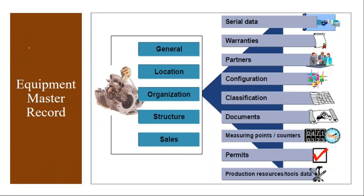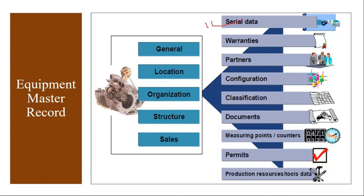In the equipment master record, you have tabs where you will maintain the data - tabs like general data, location data, organization data, structure data, and also sales data, because we are selling it to the customer. You can also maintain serial data, warranty data since we give some warranty - one year or five years warranty. All this data you will maintain, along with partner information - who is responsible for that equipment, internally or externally.